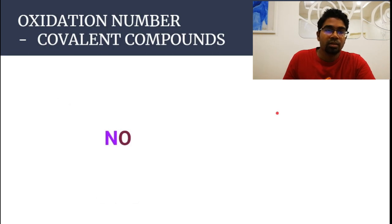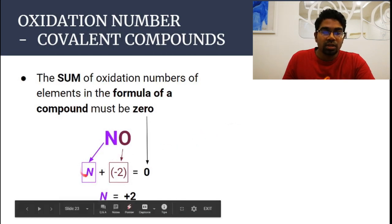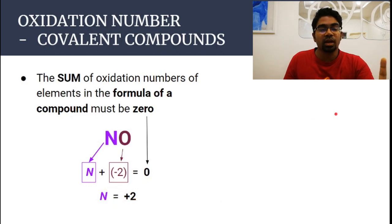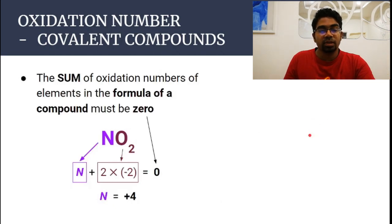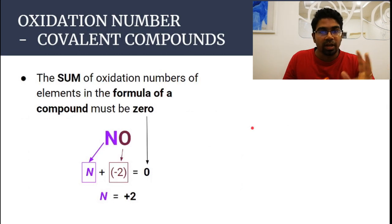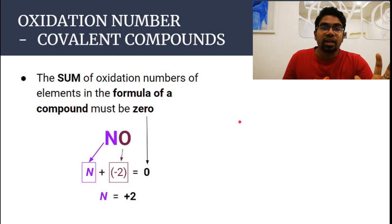Now try nitrogen monoxide instead. The answer you should get is plus two. Oxidation number of nitrogen plus oxidation number of one oxygen must equal zero, so the oxidation number of nitrogen here is plus two. From this, notice that nitrogen can have different oxidation numbers — not all, but some elements can have multiple oxidation numbers. This helps you understand what you learned earlier about transition elements: transition metals can have several oxidation states, and this is what that means.